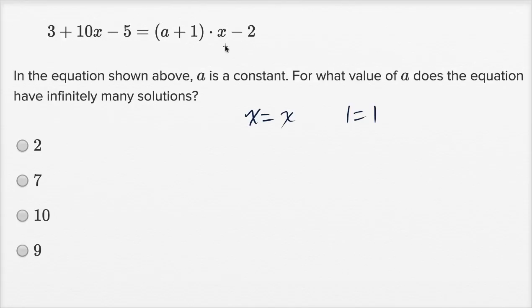When I look at this equation, my first instinct is to see if I can simplify it a little bit. I'll leave the a in there and then see if I can get to a point where it's going to have an infinite number of solutions. Let me rewrite it: 3 + 10x - 5 = (a + 1) × x - 2.